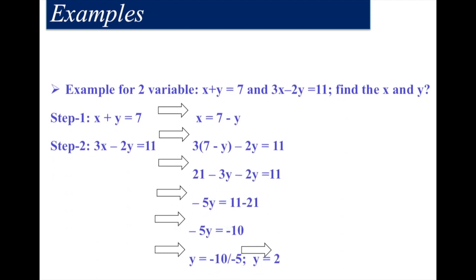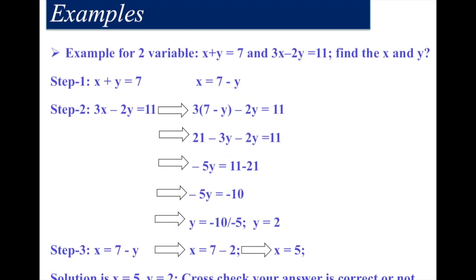Now let's look at a two-variable example. The question is: x plus y equals 7, and 3x minus 2y equals 11. Find x and y. Step 1: from the first equation, x equals 7 minus y. Step 2: substitute this x value into the second equation — 3 times (7 minus y) minus 2y equals 11.